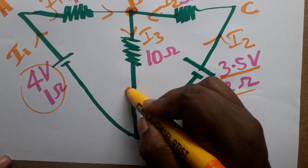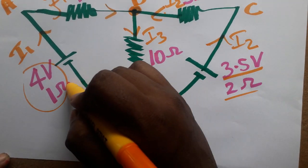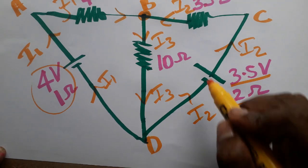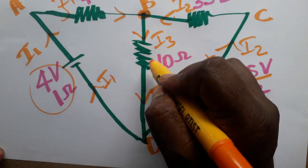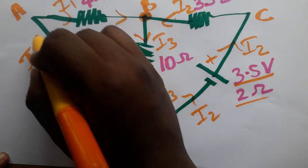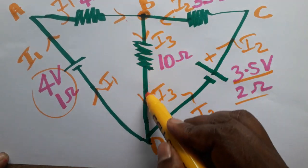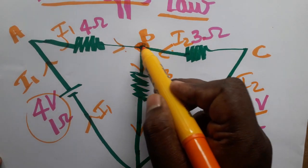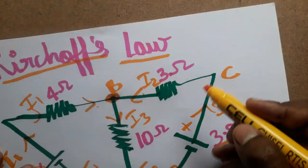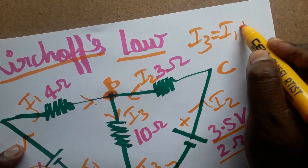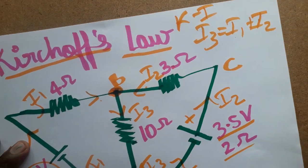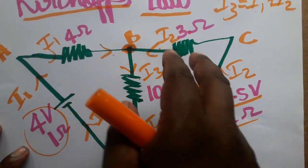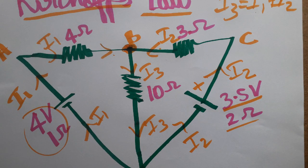At the junction, I3 is going out. The 4-volt battery supplies I1, and the other battery supplies I2. From I1 and I2 starting and combining, they become I3. At the junction, I3 equals I1 plus I2. This is Kirchhoff's first law: the algebraic sum of all currents at any junction is zero, so I1 plus I2 equals I3.